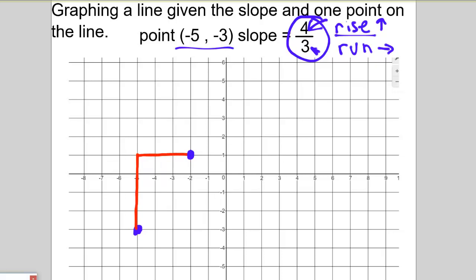And I can go up 4 and 3 again if I wanted more points. So up 1, 2, 3, 4, and over 1, 2, 3. And there's my other point. And if I had more space, I could go further to the right or further to the left on the graph.